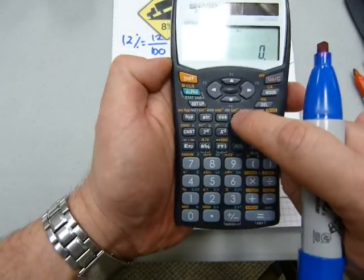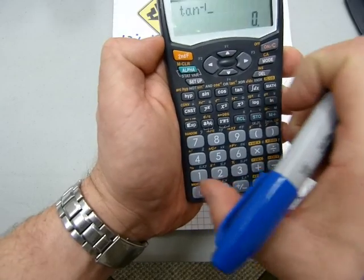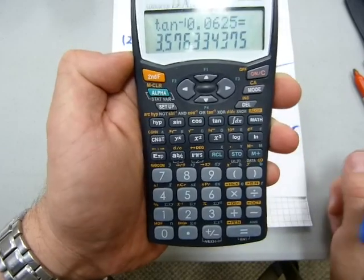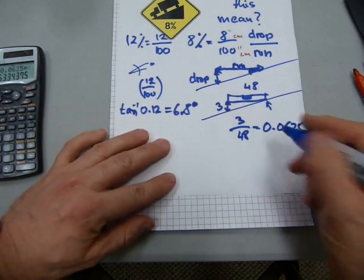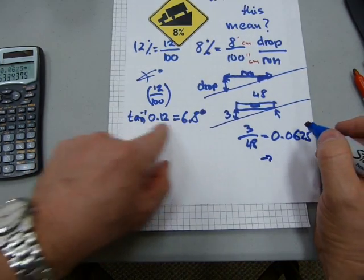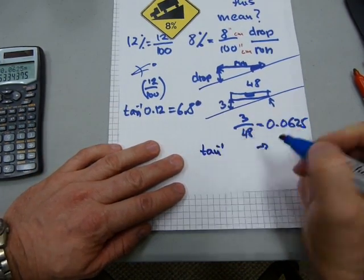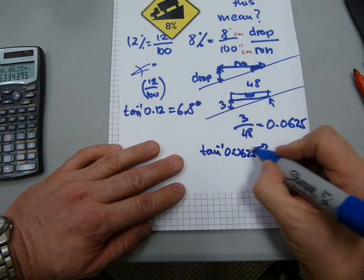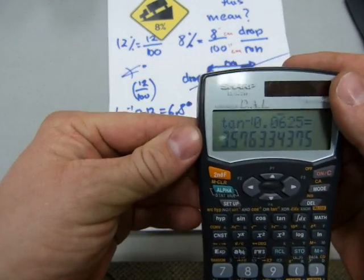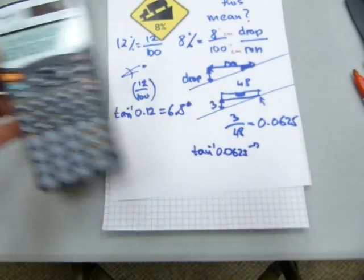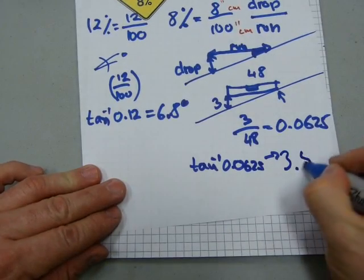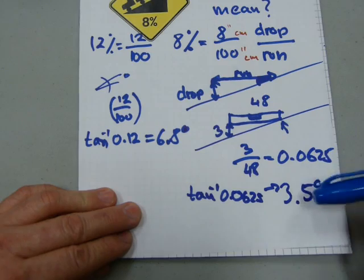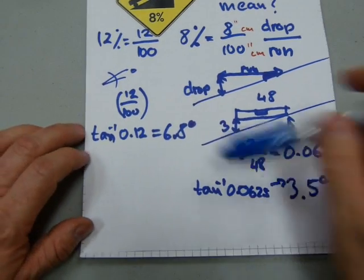And then just go second function, tangent. 0.0625. That's 3 and a half degrees. So if you, that converts to, with the same type of math. Tangent. Second function. That's what the minus one is. 0.0625. That's what I entered. And it gives me, again, what was that number? 3.5 degrees. That's a 3.5 degree slope. And that's how you get your slope measured in degrees.